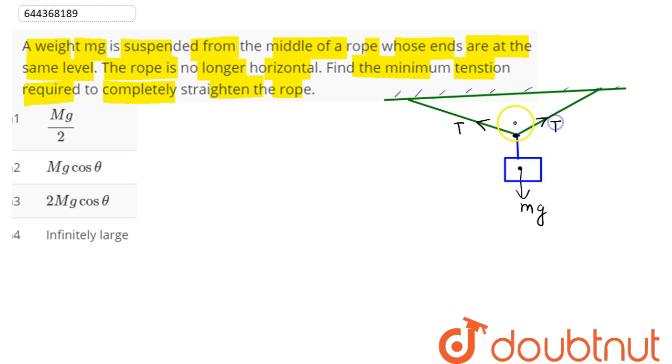The tension in the string is T. By symmetry, we can say both angles here will be theta. The vertical component of this tension, T sine theta, balances out each other.